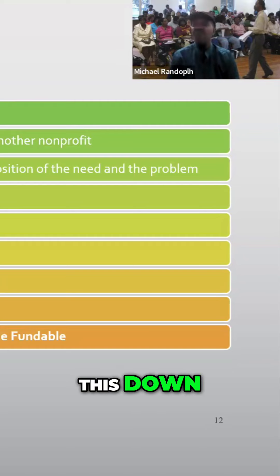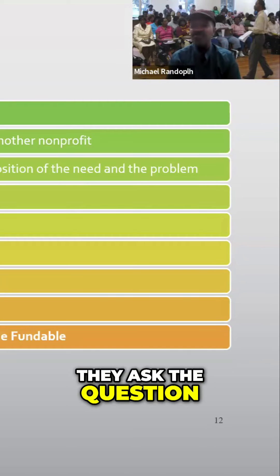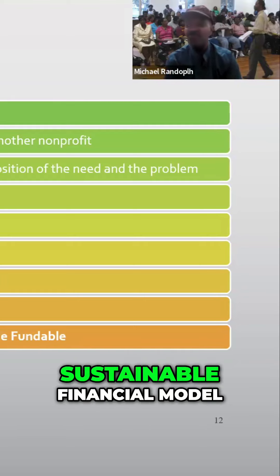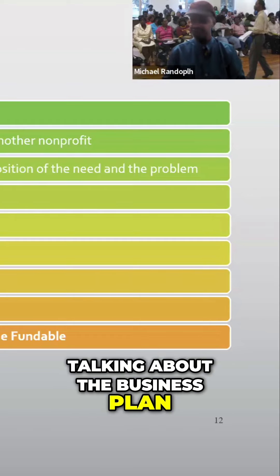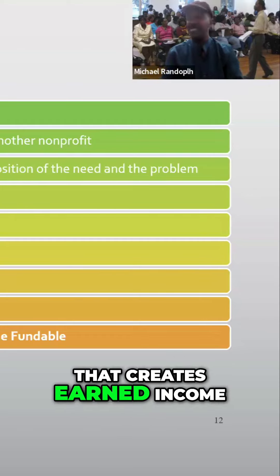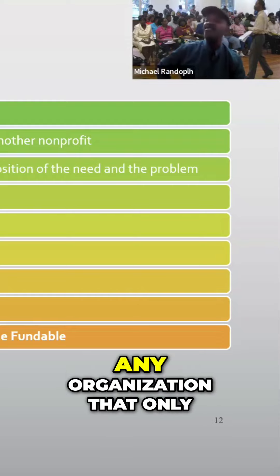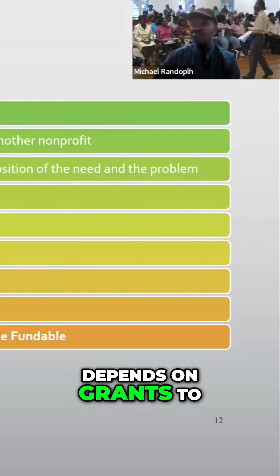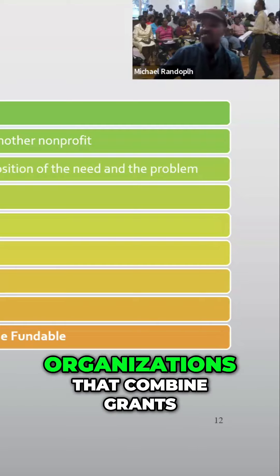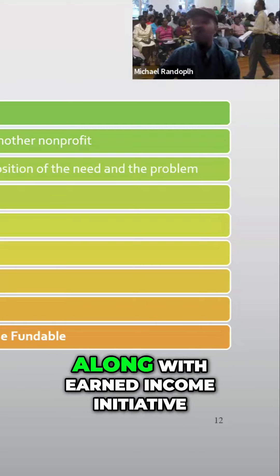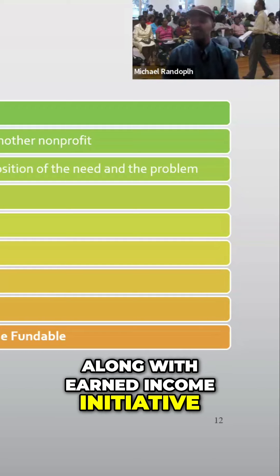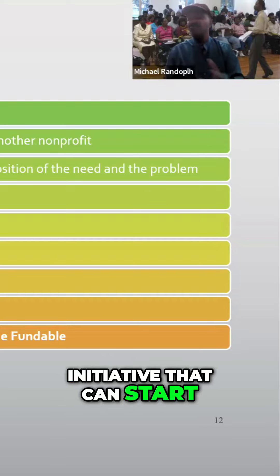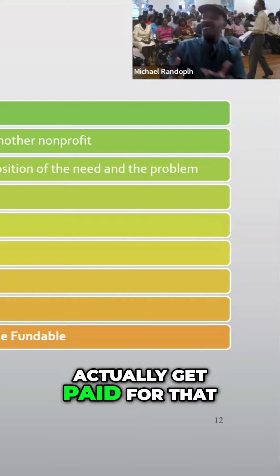Make sure you take this down. First, funders ask: what is your organization's sustainable financial model? This is when we talk about the business plan that creates earned income in addition to grants. Any organization that only depends on grants will fail. Organizations that combine grants along with earned income initiatives — including starting different businesses that you actually get paid for — are far more resilient.